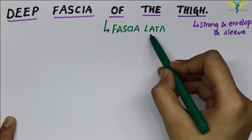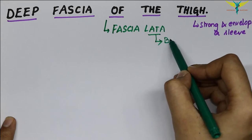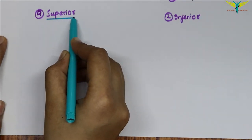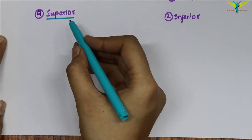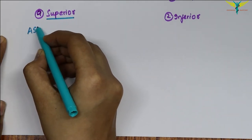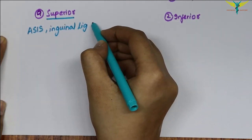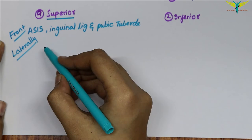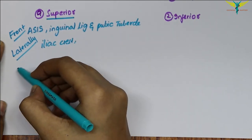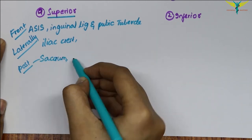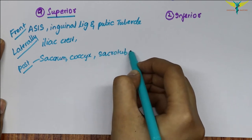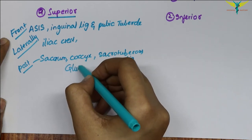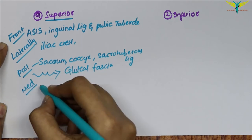In Latin, 'lata' or 'latus' means broad. It has two attachments: the superior attachment and the inferior attachment. Superiorly, on the front of the thigh, it is attached to the anterior superior iliac spine, the inguinal ligament, and the pubic tubercle. Laterally it is attached to the iliac crest, and posteriorly it is attached to the sacrum, coccyx, and the sacrotuberous ligament through the gluteal fascia.